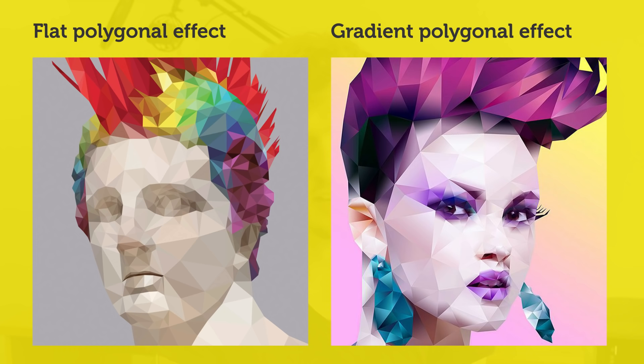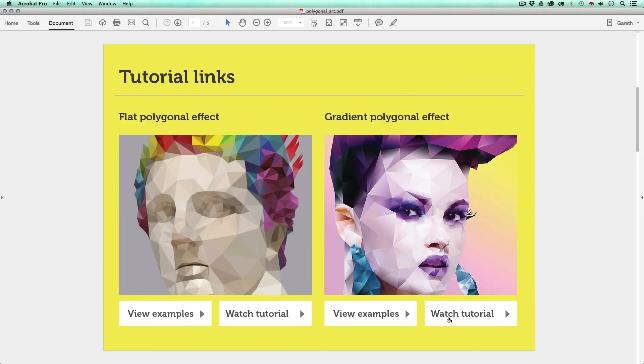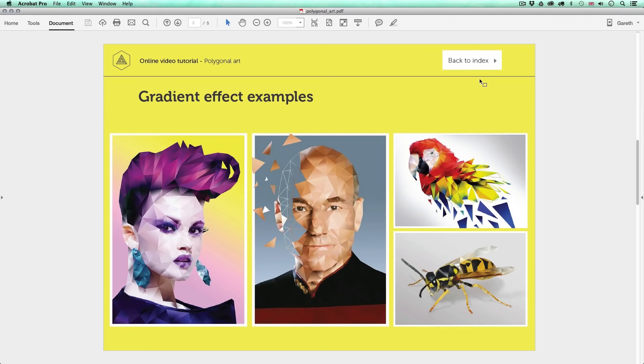In this tutorial I'm going to demonstrate a flat polygonal effect. In a previous episode I demonstrated how to create a gradient polygonal effect — in that episode I used Illustrator to first trace an image and then took the paths into Photoshop to add the gradient effect. If you're interested in the gradient polygonal effect, you can find the link to that tutorial in the description or check out the PDF reference document in the downloadable project folder.